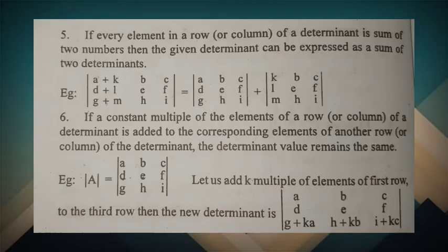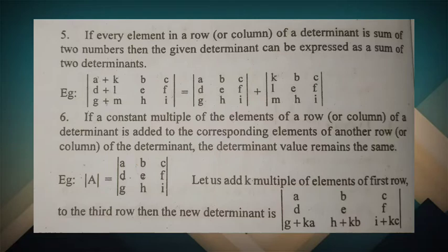Fifth property: if every element in a row or column of a determinant is a sum of two numbers, then the given determinant can be expressed as a sum of two determinants. When each element of a row or column is split into two parts, the determinant can be written as the sum of two separate determinants.